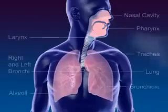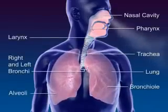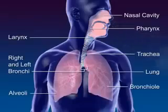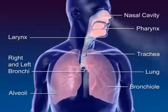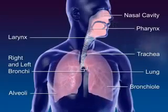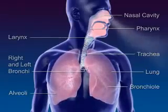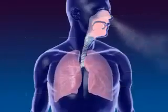The respiratory system moves air through the nose, pharynx, larynx, trachea, and bronchus to the alveoli, where the gas exchange between oxygen and carbon dioxide occurs.